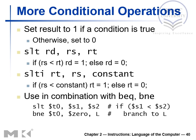More conditional operations: SLT, which stands for set on less than, sets the result to one if the condition is true, otherwise sets it to zero. This is an R-type instruction with a destination register RD and two source registers RS and RT. It works as follows: if RS is less than RT, then RD is set to one.